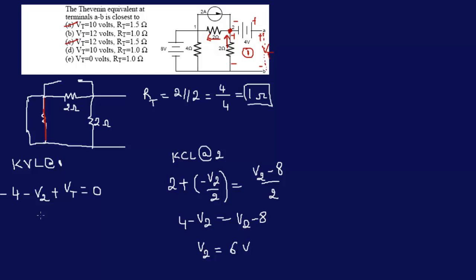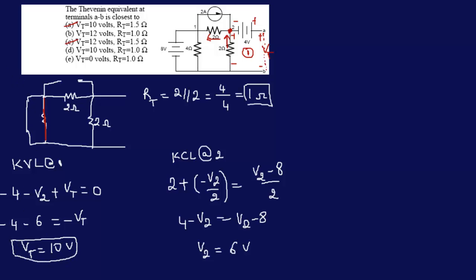If V2 is 6, we can come back to the KVL equation: minus 4, minus 6, equals minus VT. Therefore, VT is equal to 10 volts. So the answer to this multiple choice question is D. Alright, see you for another problem.